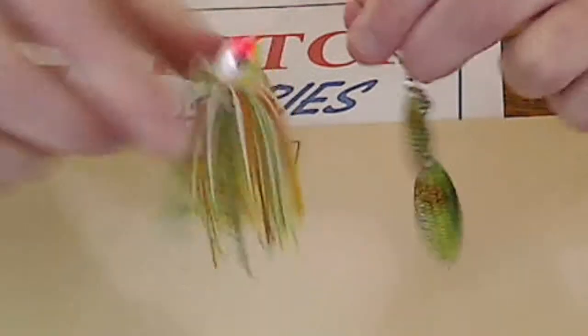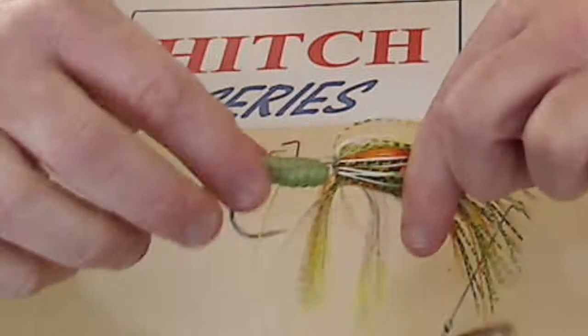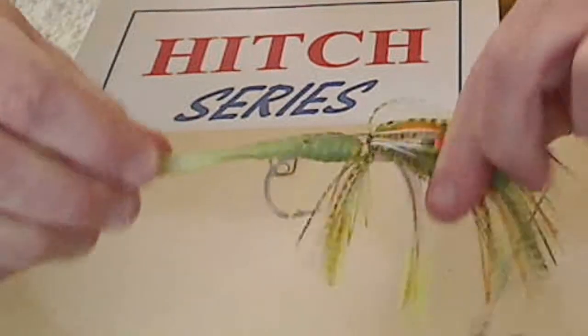Works the same on your favorite spinnerbait. Again, it's easily added, and will easily hold your favorite trailer. Whether it's a grub or a worm, it keeps it from sliding down the hook.